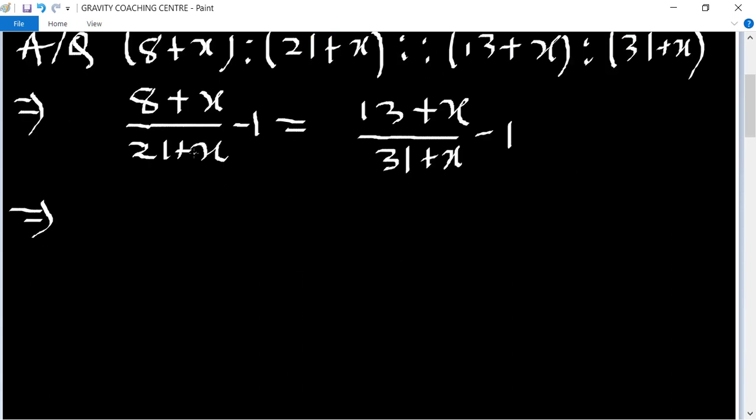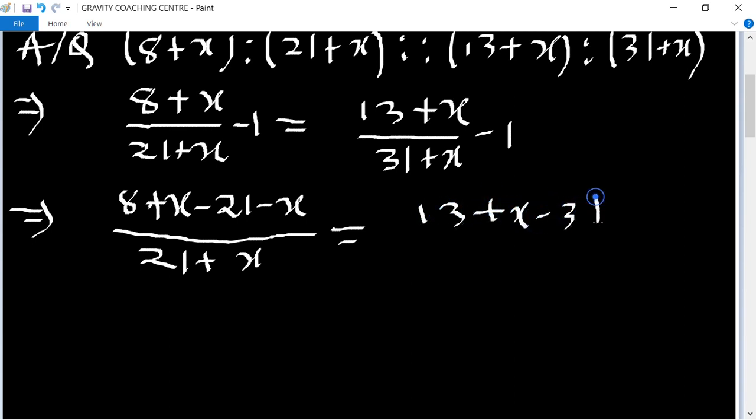Now we put minus 1 on both sides to easily solve. 8 plus x minus 21 minus x upon 21 plus x equals 13 plus x minus 31 minus x upon 31 plus x.